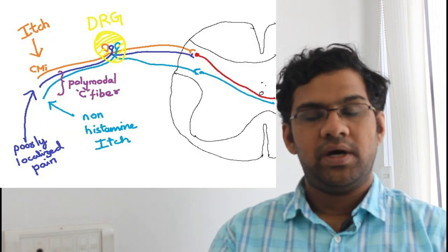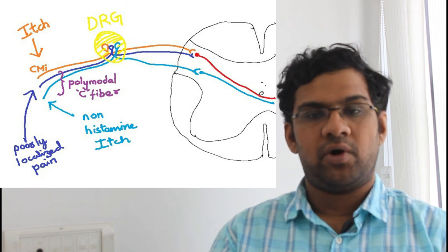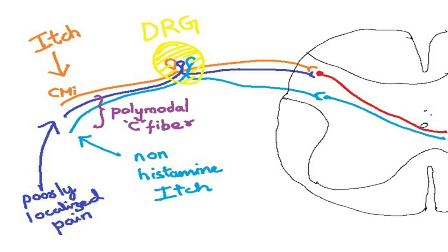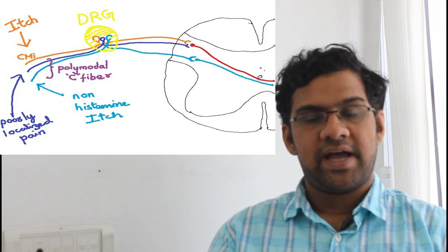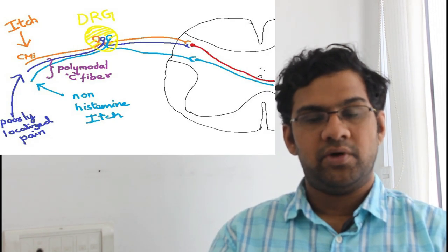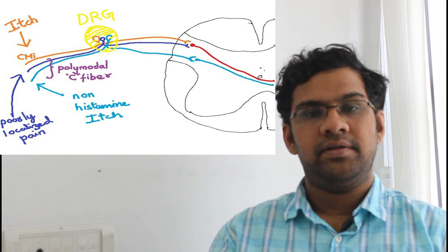As we have already discussed, in this diagram I show you how an itch neuron reaches the spinal cord. I have given orange color for CMI fibers and blue color for polymodal C fibers. I have differentiated with different colors of blue to differentiate itch-carrying polymodal C fiber and pain-carrying polymodal C fiber. These neurons have their cytons at dorsal root ganglion and they enter the spinal cord at dorsal root horn.